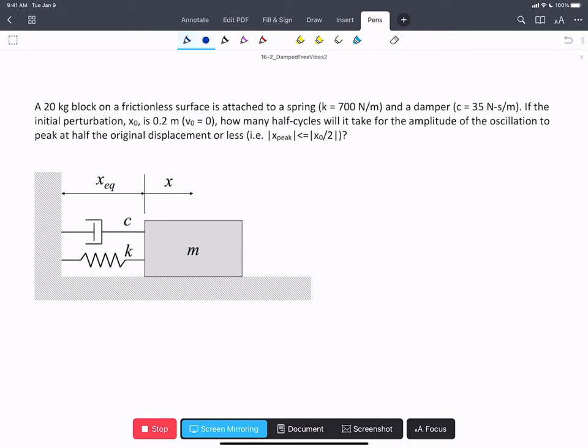We're told that the initial perturbation is 0.2 meters with no initial velocity. And we're asked to find out how many half cycles it will take for the amplitude of the oscillation to peak at half the original displacement or less.